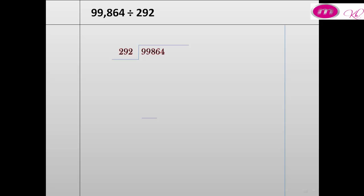First we take the three digits on the left: 998 divided by 292. We look at the first digit on the left — 9 — and try 4: 4 by 292 equals 1,168. That is too large, so we try 3: 3 by 292 equals 876. We take 3.